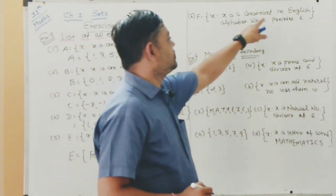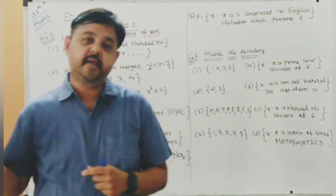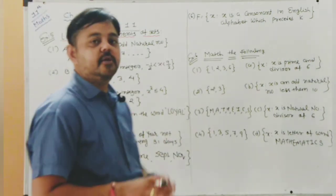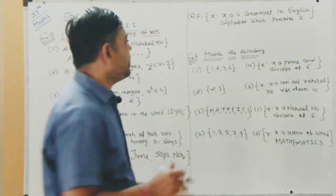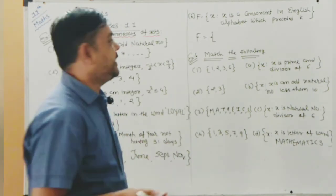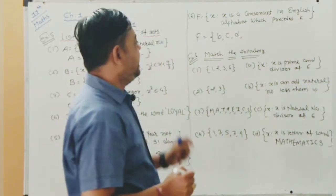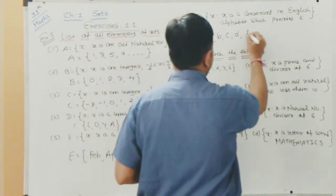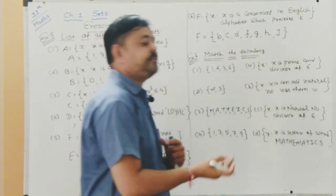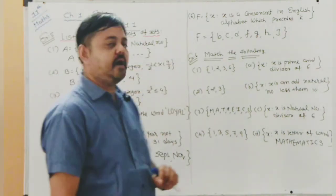Set F = {x : x is a consonant in the English alphabet which precedes K}. Letters before K are A, B, C, D, E, F, G, H, I, J. Removing vowels (A, E, I), the consonants preceding K are: B, C, D, F, G, H, J.